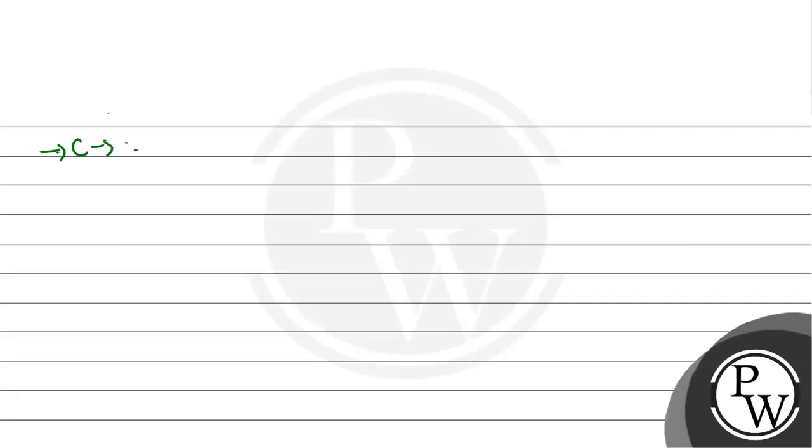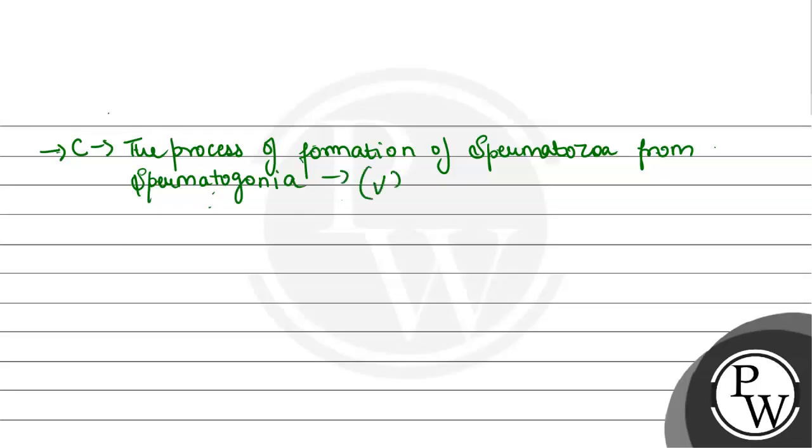Statement C given is the process of formation of spermatozoa from spermatogonia. This is the fifth labeling given. And the process of maturation, the process of maturation of spermatids into spermatozoa, this is the labeling of 6.